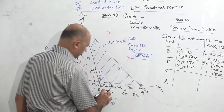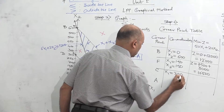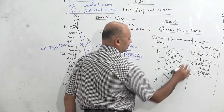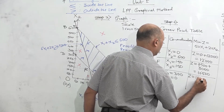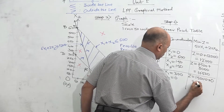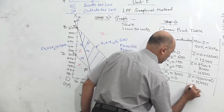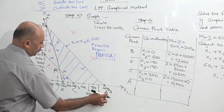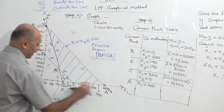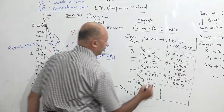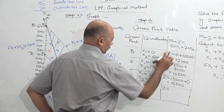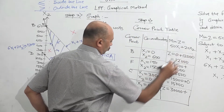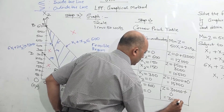At point C: x1 equals 300 and C is on the horizontal axis so x2 equals 0. Substituting: Z equals 50 times 300 plus 20 times 0 equals 15,000. At point A: x1 equals 600 and A is on the axis so x2 equals 0. Substituting: Z equals 50 times 600 plus 20 times 0 equals 30,000.